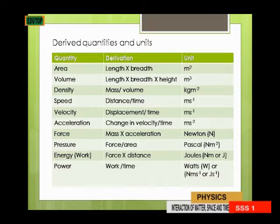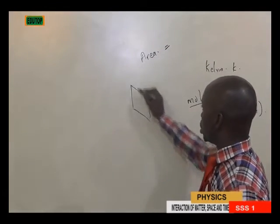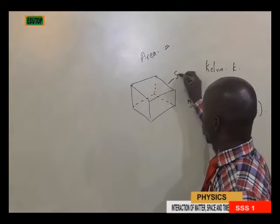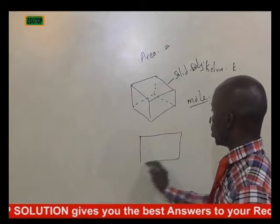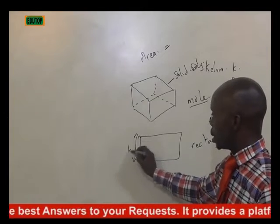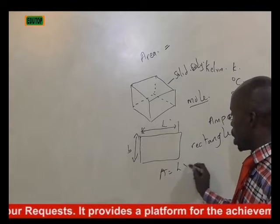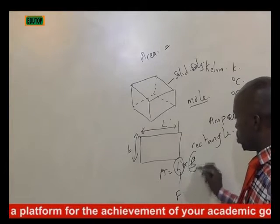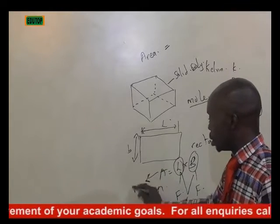Let me break that down. When you have area, how do you measure it? Consider a plane body in a rectangular shape — it has breadth and length. The area of this body is length times breadth. Length is a fundamental quantity and breadth is a fundamental quantity. When the two come together, they produce area, which is now a derived quantity.